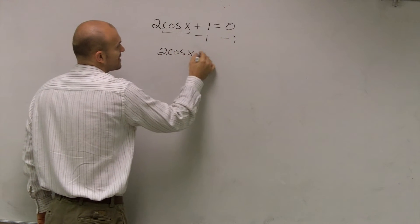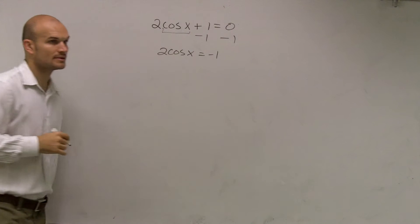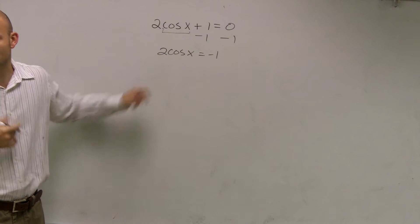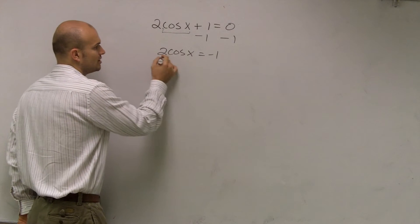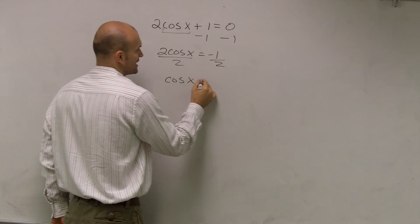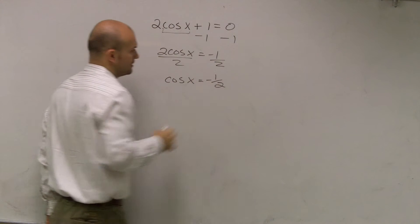I get 2 cosine of x equals negative 1. Then I'm going to want to undo the multiplication that's happening to it, so I'm going to undo multiplication of 2 by dividing by 2. So I get cosine of x equals negative 1 half.